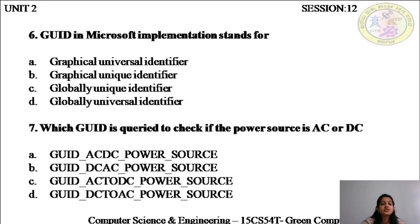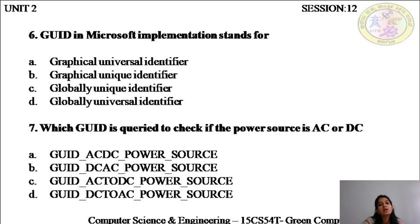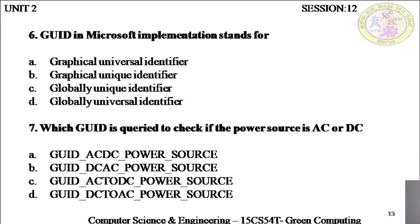The seventh question is: which GUID is queried to check if the power source is AC or DC? It is GUID_AC_DC_POWER_SOURCE — the answer is A. When you query this particular GUID, it gives your application a response to determine whether your device is connected to DC or AC and then can effectively decide what to do next. For example, if you have a software download and you're running low on battery, do you want that application to start installation? No. How does the application know you're running low on battery and on DC? It is by querying this particular globally unique identifier.